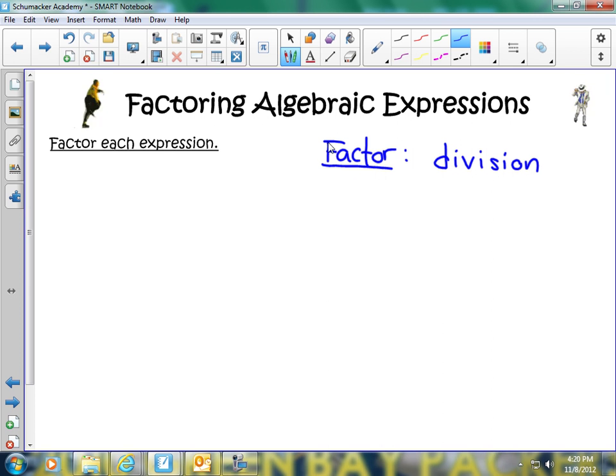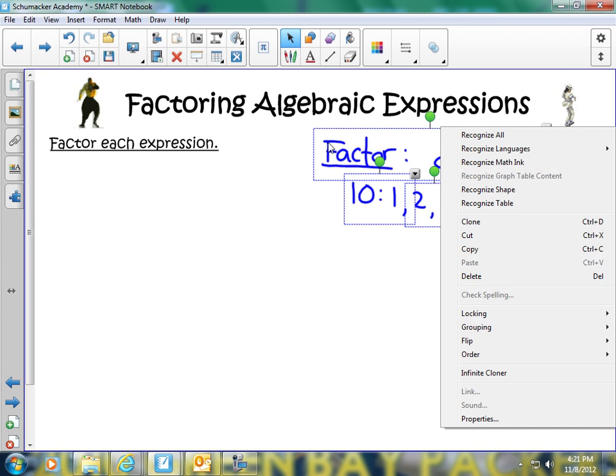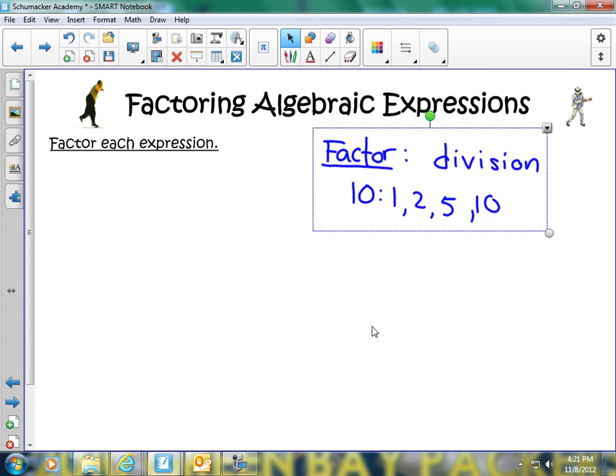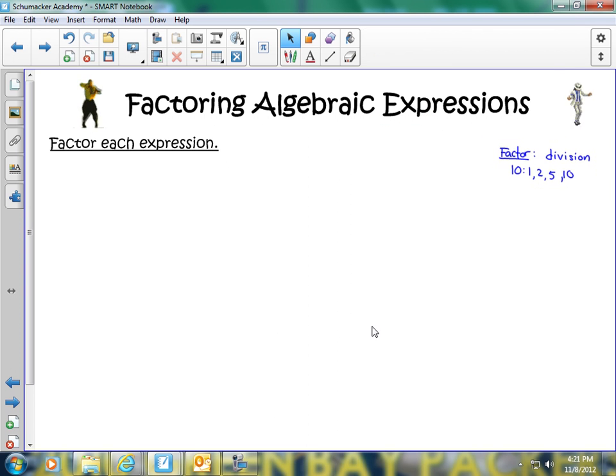For example, if I have the number 10, factors of 10 are 1 times 10 and 2 times 5. Those are our factors of 10. What we're going to do here is look at algebraic expressions and try to find a common factor that they both have, then factor it out until we get an expression that's simplified, completely factored out.